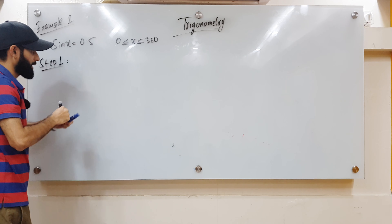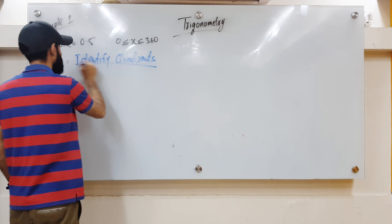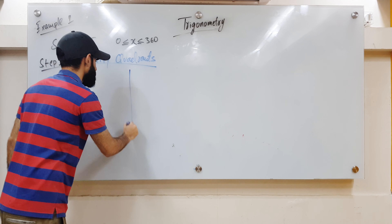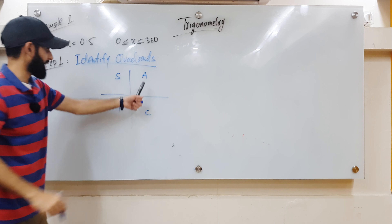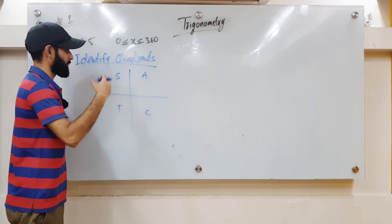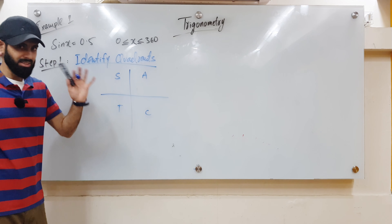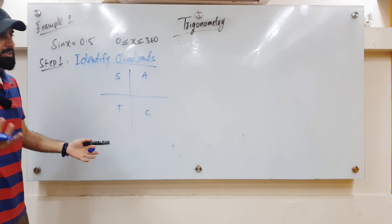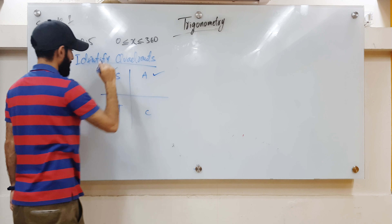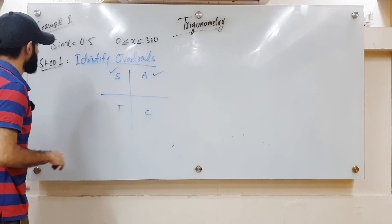Step one: identify the possible quadrants you're dealing with. Since sin x = 0.5 and this value is positive, the two quadrants I'm likely to be in are the first and the second. By the way, to memorize the ASTC rule, one way is 'add sugar to coffee,' or 'all science teachers are crazy' — the good kind of crazy, always thinking, always coming up with new stuff. So sin x = 0.5 means x may be in the first quadrant, meaning it could be an acute angle, or x could be in the second quadrant, meaning it could be an obtuse angle. That was step one.